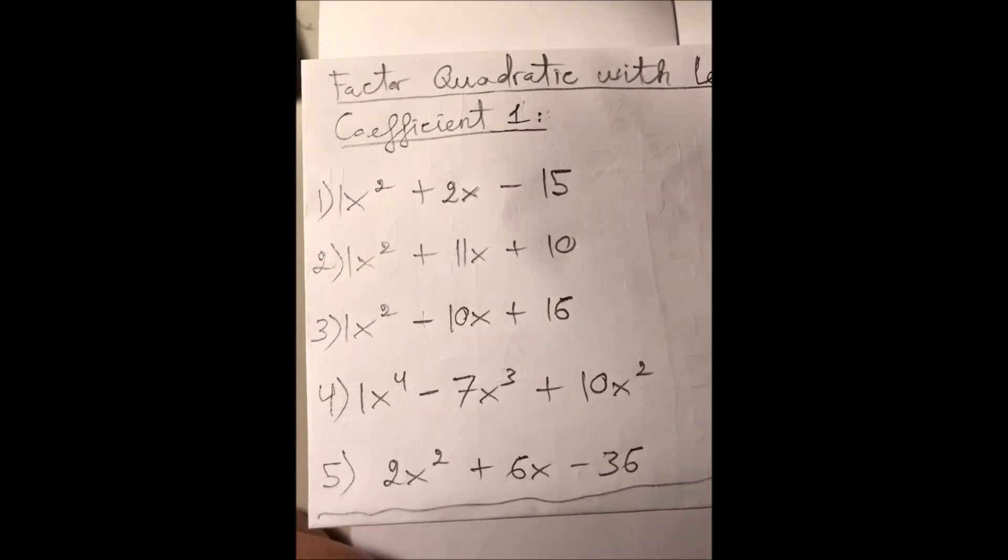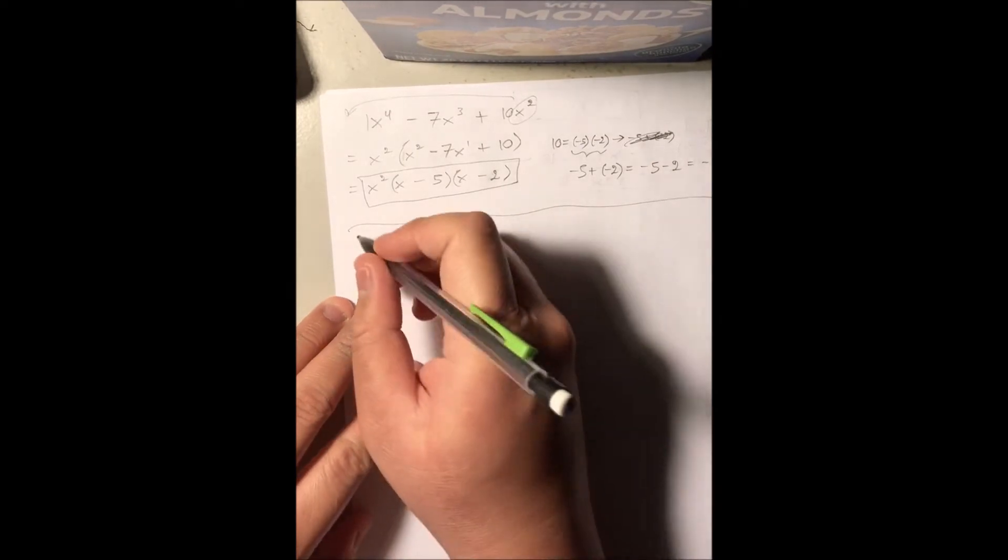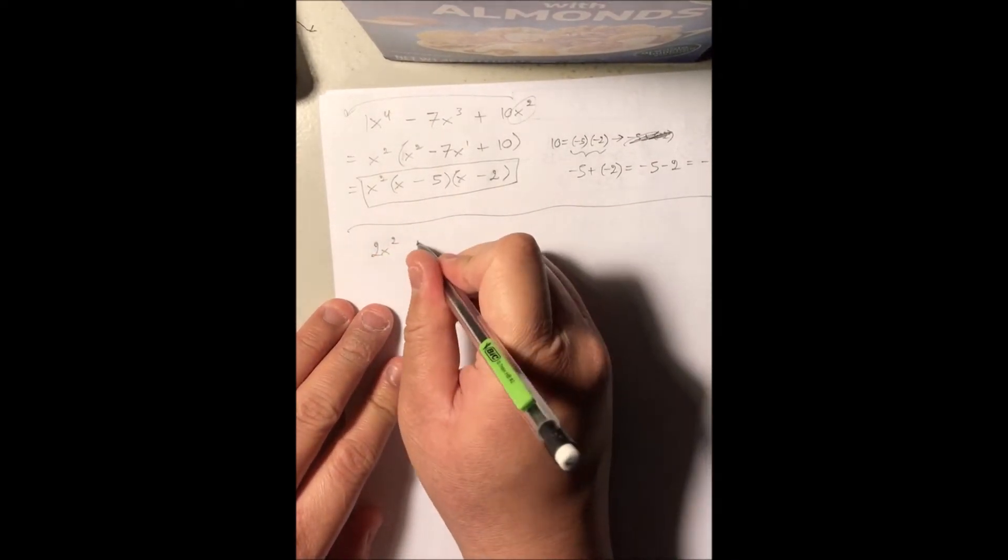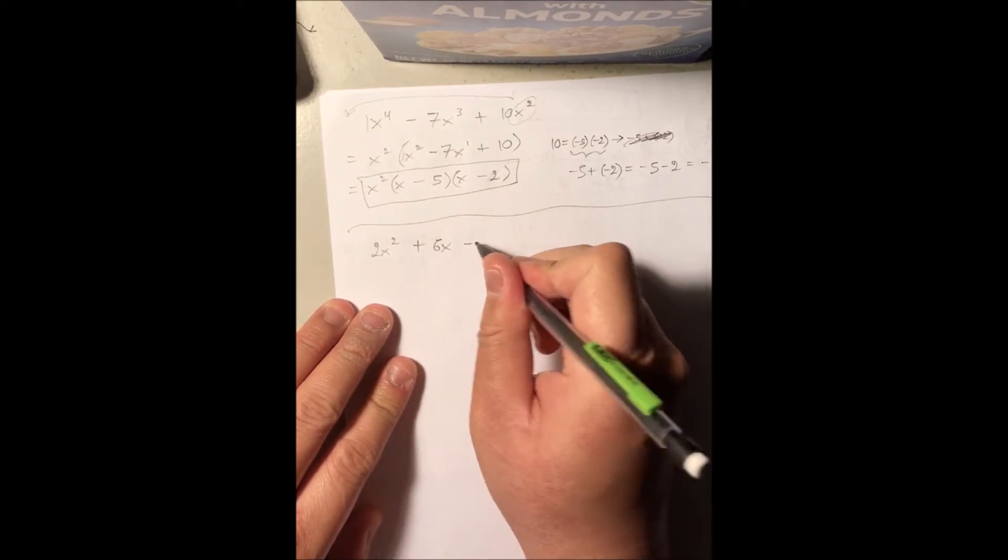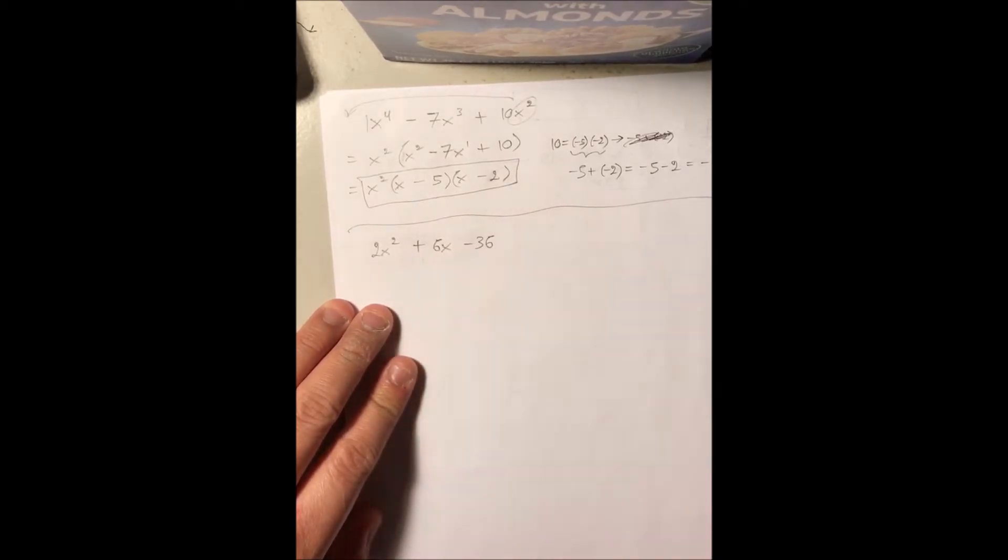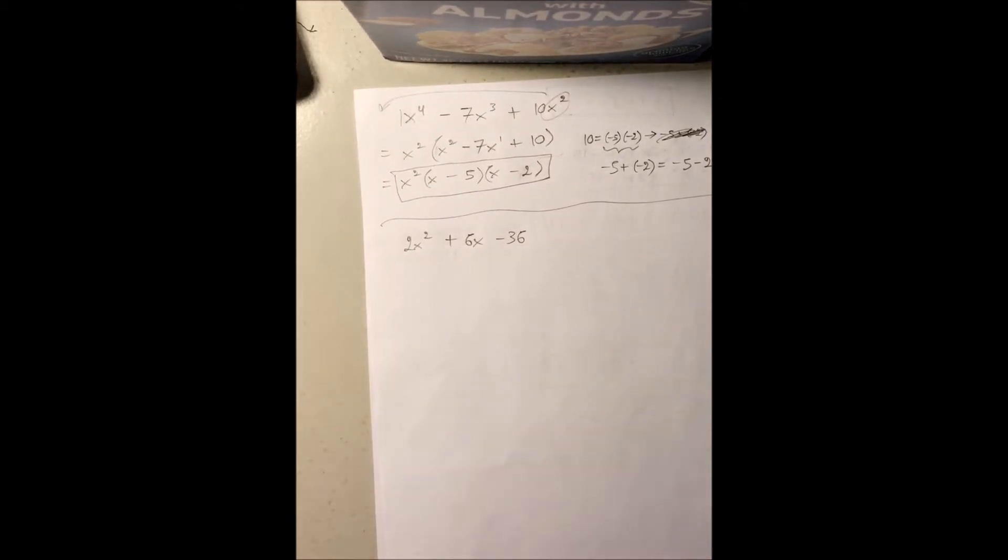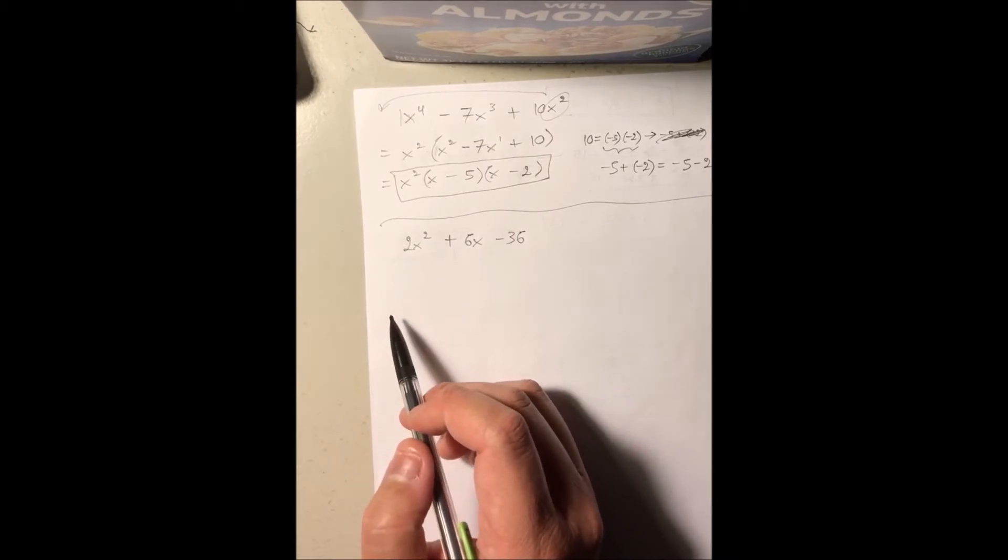Last example is number 5. So we got 2x squared plus 6x minus 36. Now, looking at this quadratic expression, the leading coefficient is not positive 1, it is positive 2 instead.